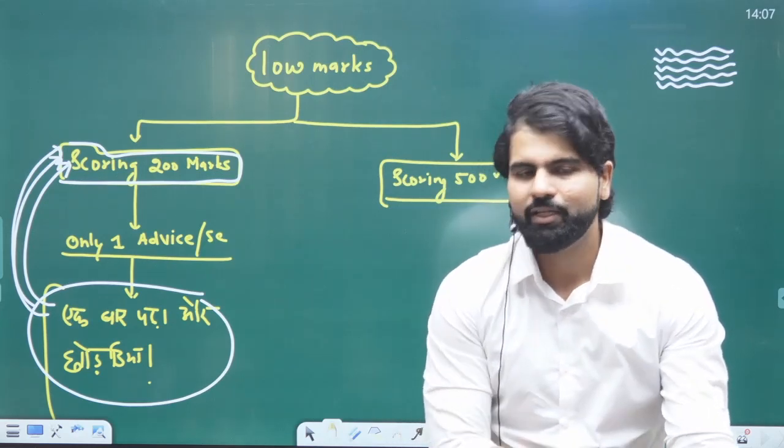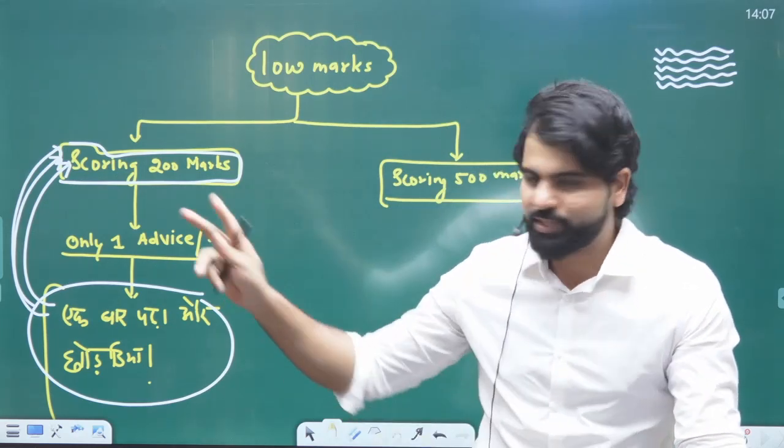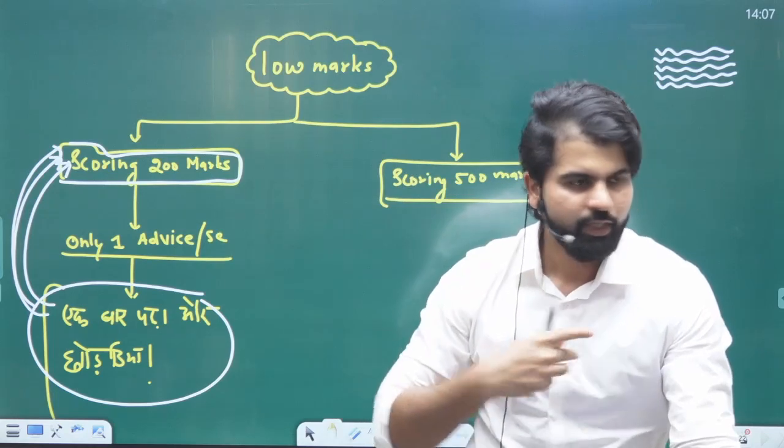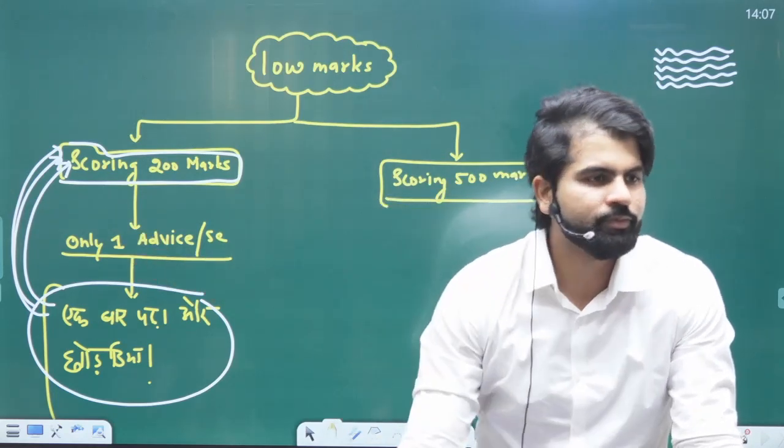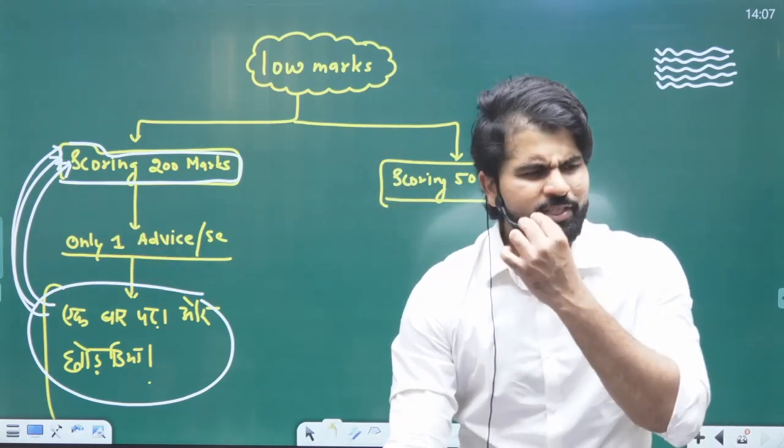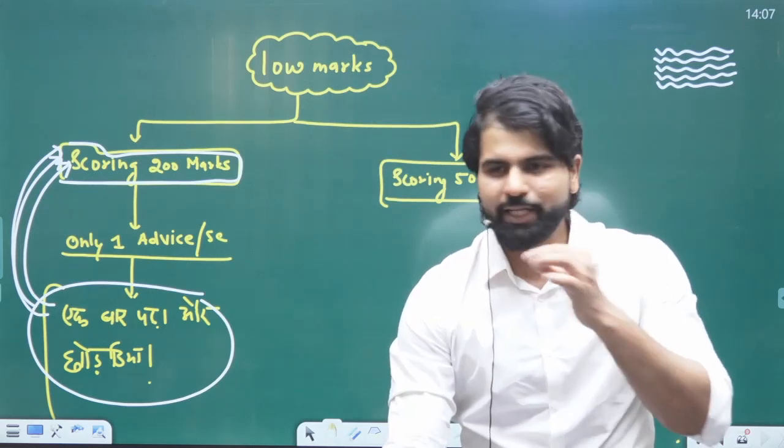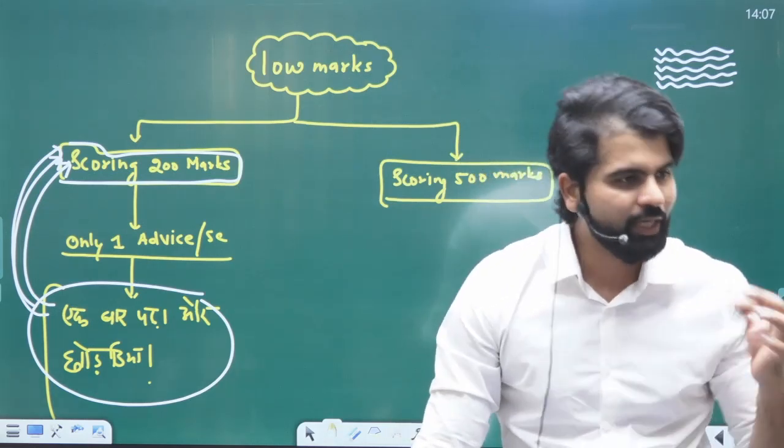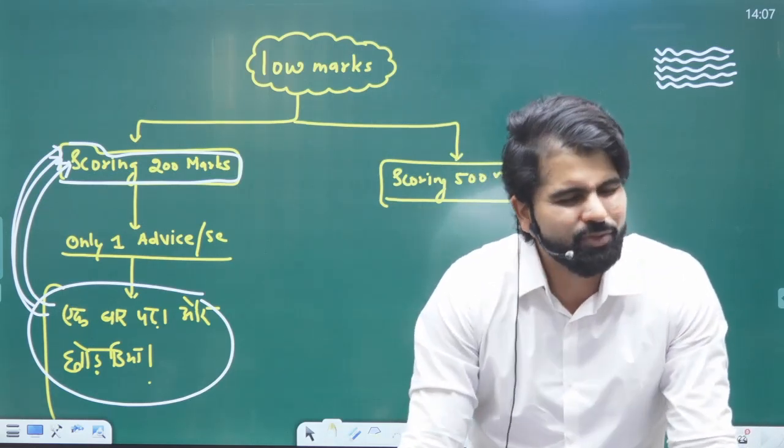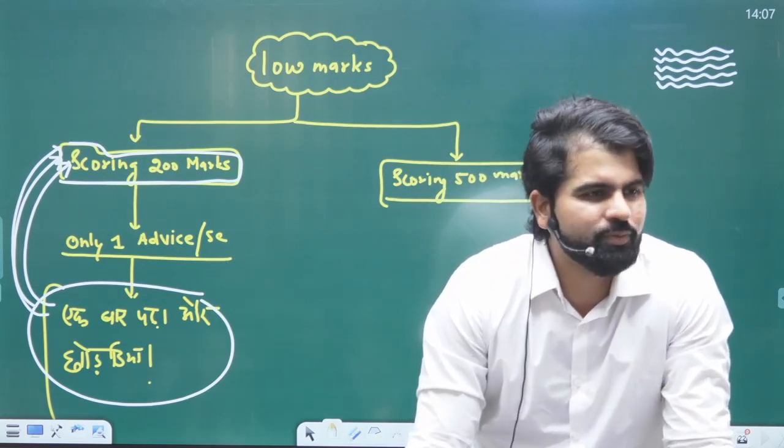So we have to understand that both are weak. The first strength is also weak, the last strength is also weak. There is no difference. But the one who is successful is stuck, and the unsuccessful is stopped.